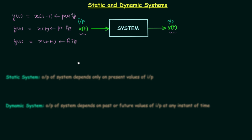An important point: the input is always x(t). In case 1 and case 3, y(t) = x(t−1) and y(t) = x(t+1) — this does not mean the input itself changed. The input remains x(t). We have x(t−1) or x(t+1) in the output because of the system. In case 1, the system is making y(t) equal to x(t−1). In case 3, y(t) = x(t+1) because of the system. That is why we study different system properties.